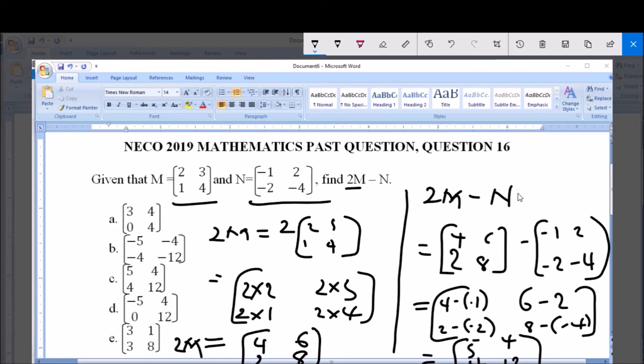So, now, the answer to this 2M minus N is a 2 by 2 matrix of 5, 4, 4, 12. This is the answer. Now, which of these options correspond to our answer? And that is option C. Option C corresponds to our answer.